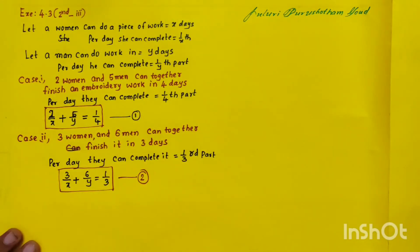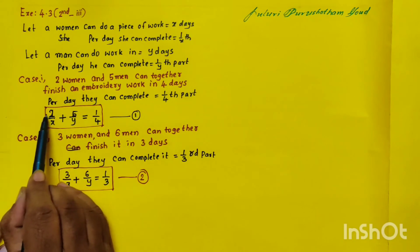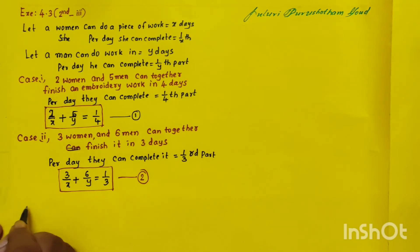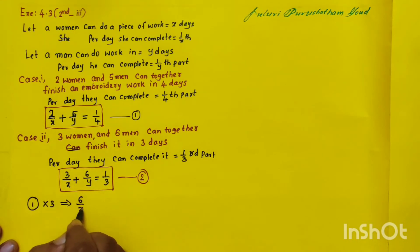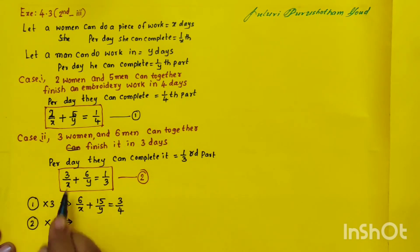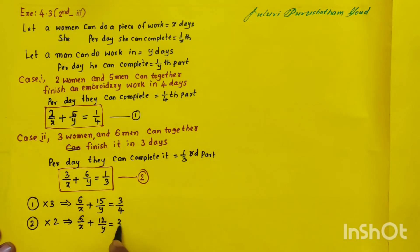To solve using the elimination method, multiply the first equation by 3 to get 6/X + 15/Y = 3/4, and multiply the second equation by 2 to get 6/X + 12/Y = 2/3. Then subtract the second from the first. The X terms cancel since they are the same, giving 15/Y minus 12/Y, which is 3/Y, equals 3/4 minus 2/3.